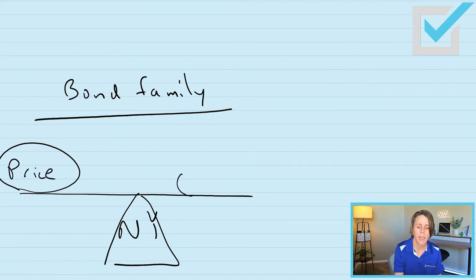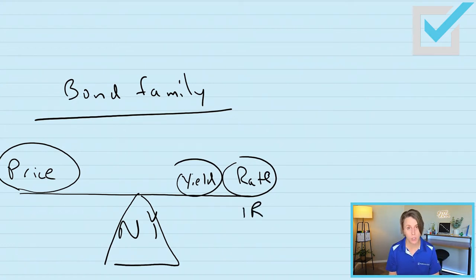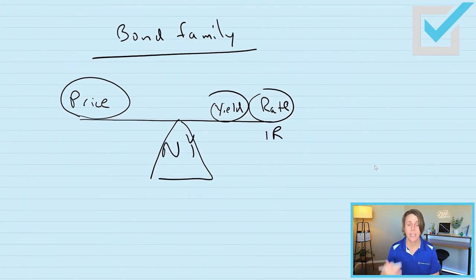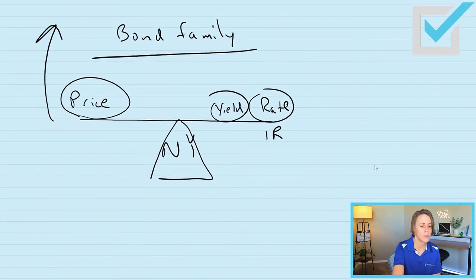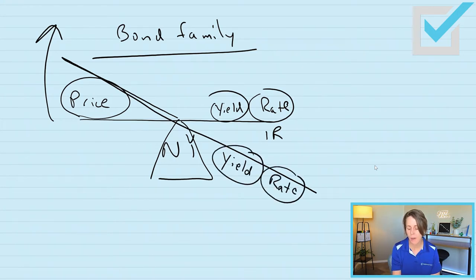So what did this question say? It said that the bond was trading at a premium. So if the price has gone up to be trading at more than par value, we would have yield and rate go down. Yield and rate always go together.